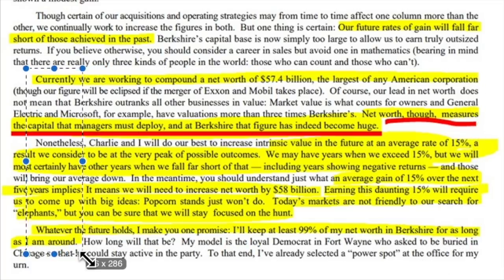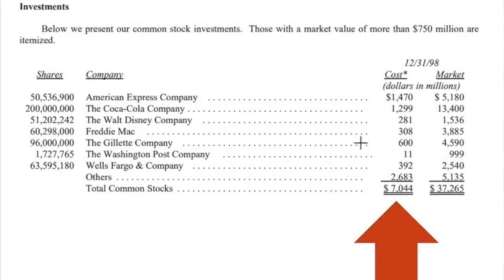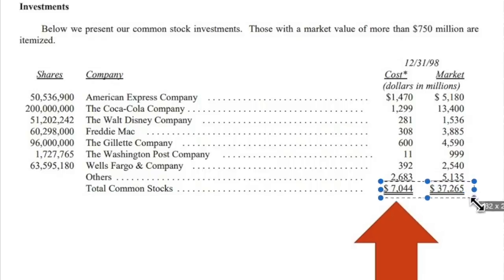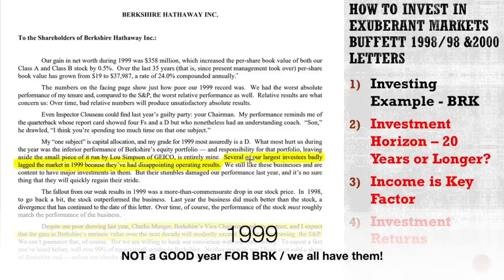I don't know where people get the idea that he said to invest in index funds. Anyway, this is his stock portfolio — he had around $15 billion in cash at that moment, also insurance cash. He had invested $7 billion into the stock market, which at that moment was worth $37 billion. So he did really well. But I want to focus on how this evolves — how his income, how his money in the stock market flows — because that is the key. We start with $7 billion in 1998.